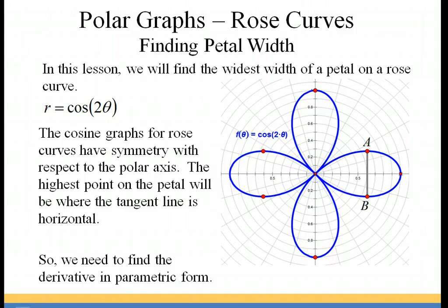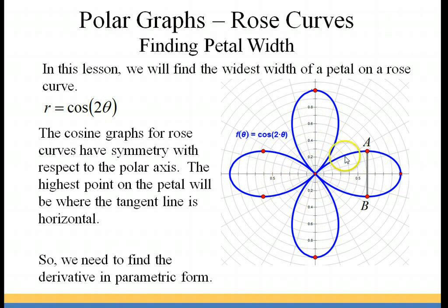Remember that the cosine graphs for rose curves will have symmetry with respect to the polar axis, and each one of them will have a petal tip on the polar axis at the angle of zero. Remember that all the petals are going to be exactly the same, so we could use any one of them in order to find the widest width.